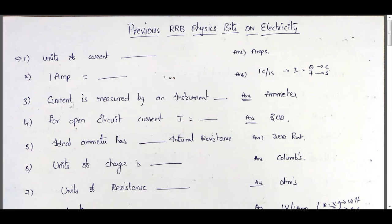The current is measured by an instrument called ammeter. For open circuit, the current I equal to 0. In case of short circuit, the voltage V equal to 0. This is a very important bit: for open circuit there is no current, and for short circuit there is no voltage drop.